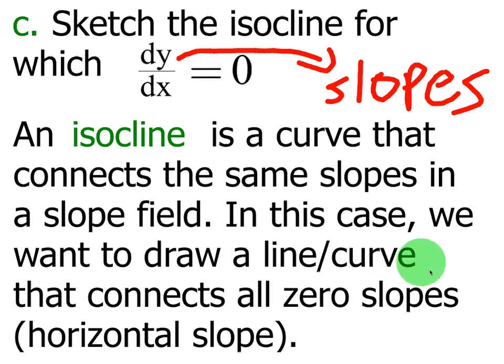In this case, we want to draw a line, and in a lot of cases, it's actually going to be a curve that connects all 0 slopes. In other words, all slopes that are horizontal on our slope field. So let's take a look at that.